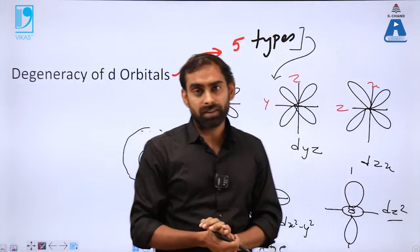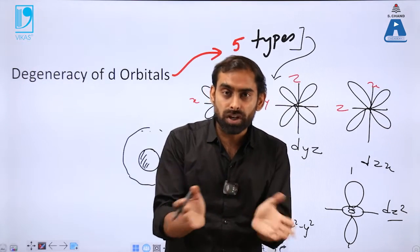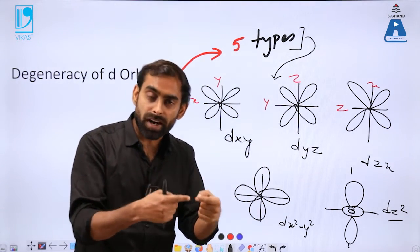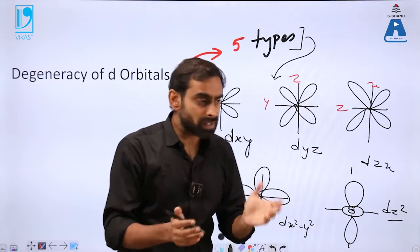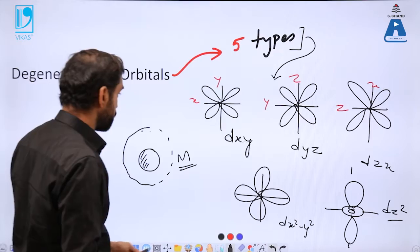But they have a preference or have a proximity towards few of them. So since they do not interact equally with all these orbitals, there is a likelihood of change in energy of those which are much closer to the ligand as compared to few other ones. So this is basically the phenomenon of crystal field splitting.